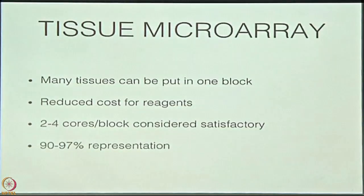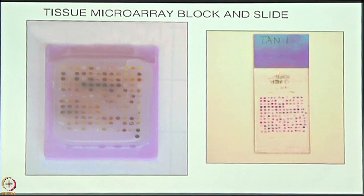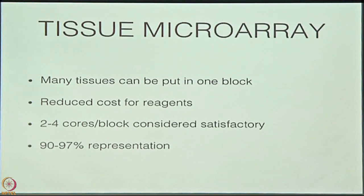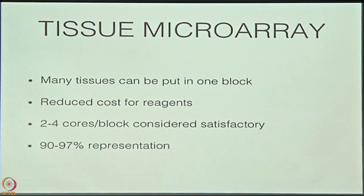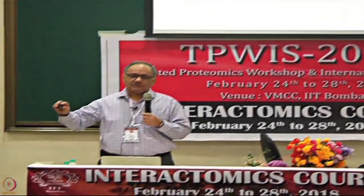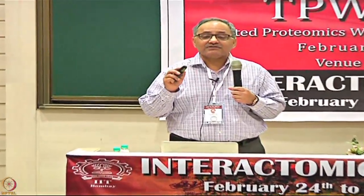The block finally has nice, neat, equal-sized cores, and when you cut the section that is the slide. It is already stained with H&E, which is a regular stain, but any stain or immunostain can be done on it. The advantages: many tissues can be put in one block, and there is reduced reagent cost. Two to four cores is normally sufficient; most people internationally use 2 cores for cancer, the protein atlas uses 2 cores for cancer, but for normal tissues we use 3. With the correct areas marked by the pathologist, this gives 90 to 97 percent representation of the original block.